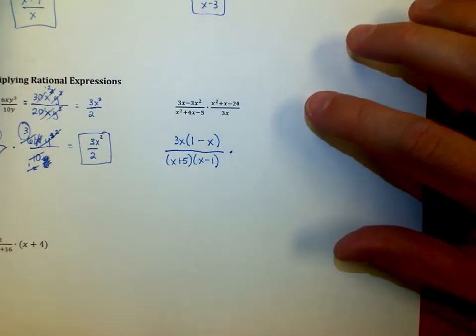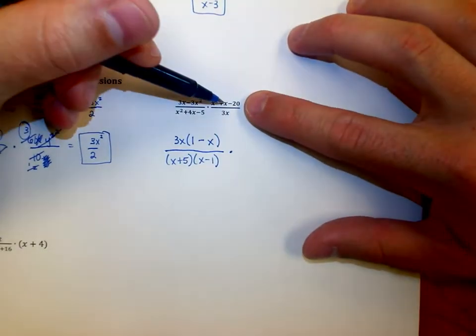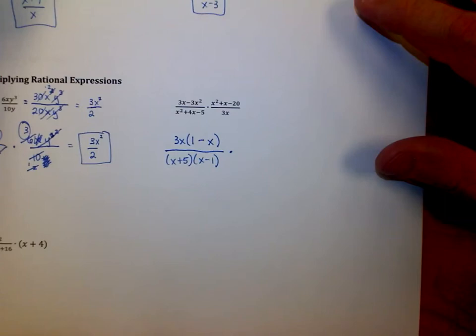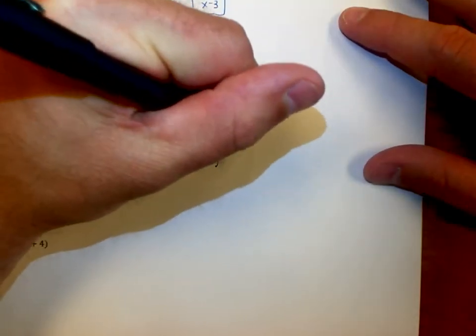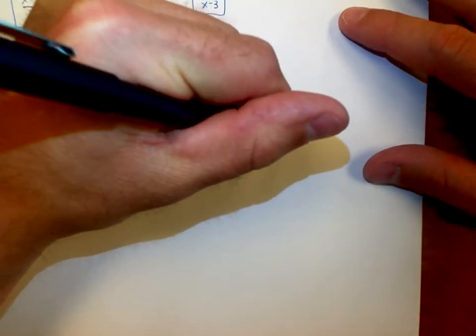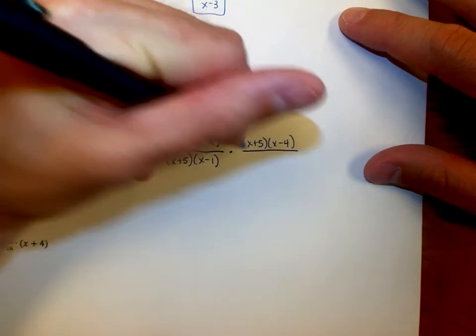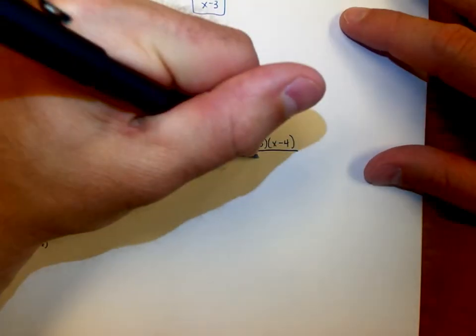The right hand side: two numbers that add up to positive 1 that multiply to negative 20—that's (x + 5)(x - 4). And then the bottom one is just simply 3x.